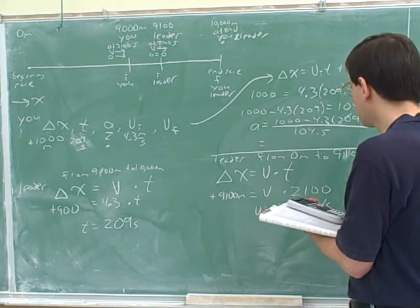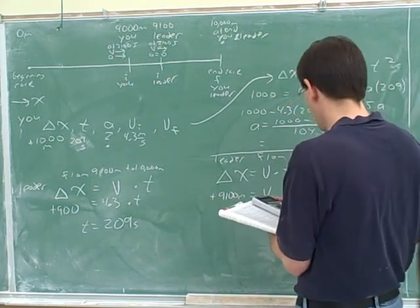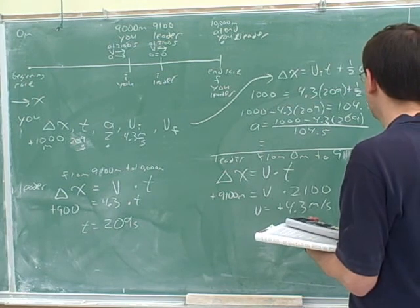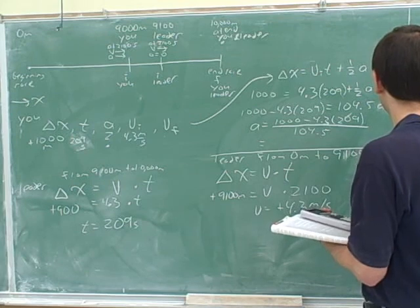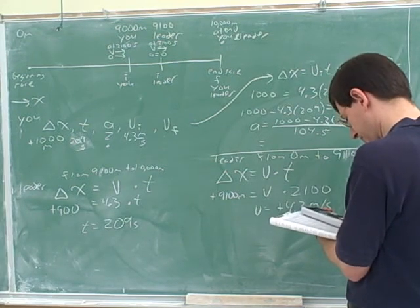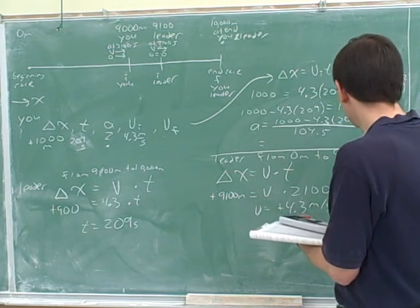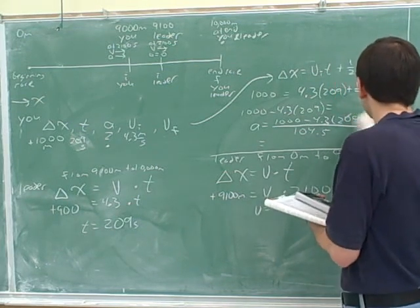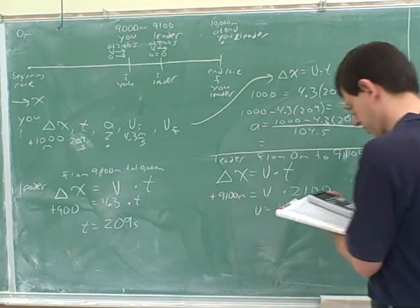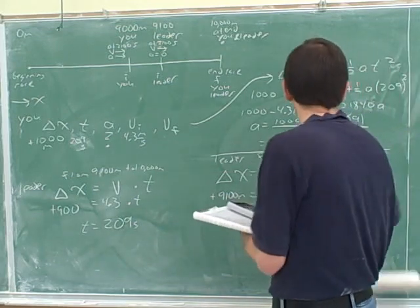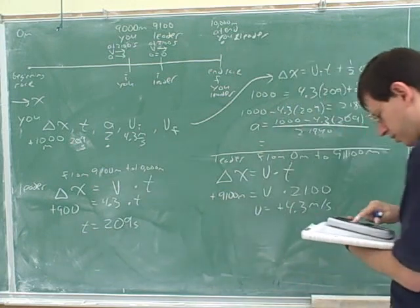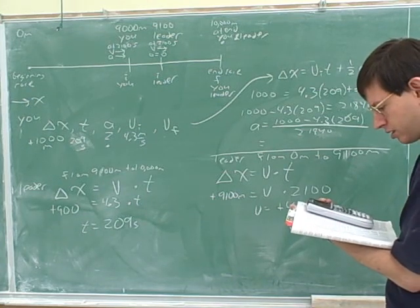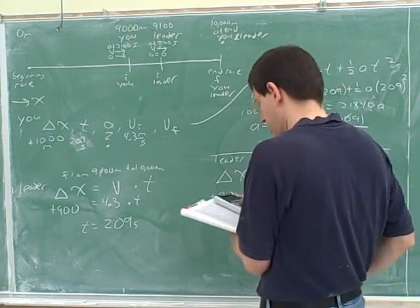What did you get as your answer? I got .0046 and she got .0049. Yeah, you didn't square the 209, you just multiplied. What did you get again? 4.9 times 10 to negative 3 and she got 4.6 times 10 to negative 3. So depending on how you round it off.